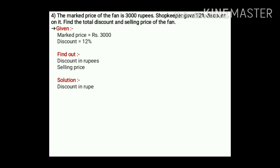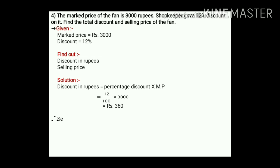Solution: discount in rupees equals percentage discount into MP, which is 12 upon 100 into 3000. After cancellation we get rupees 360. Now for selling price: SP equals MP minus discount, which is 3000 minus 360. We get rupees 2640.